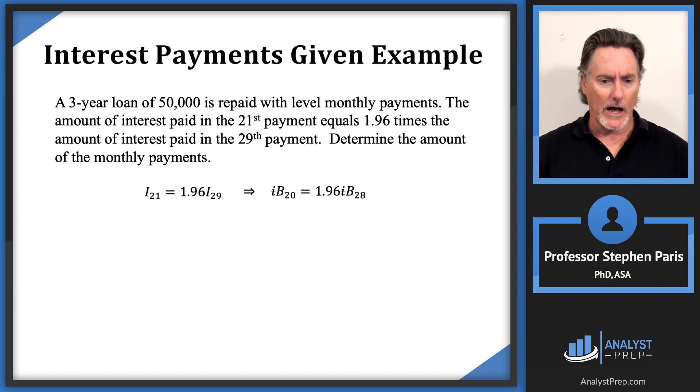Notice that the interest rates i's cancel off here, so I've got a corresponding equation with balances now. Instead of subscripts being 21, 29, the balance subscripts are at times 20 and 28. Now if we look at these balances at time 20 and the balance at time 28, we can do this prospectively. I've got level monthly payments, it makes it a little bit easier.